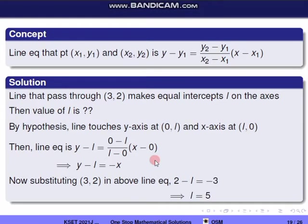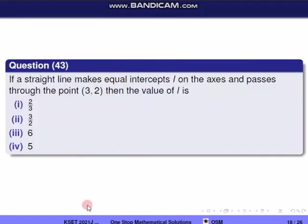The line passes through (3, 2) and through (L, 0) on the x-axis and (0, L) on the y-axis. Substituting into the line equation, we get 2 − L = −5. So the value of L gives the correct option, which is option 4.